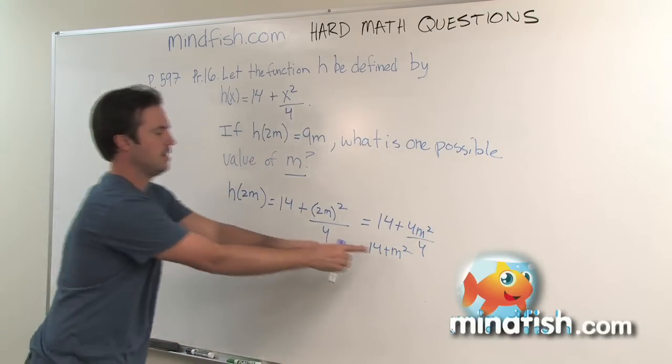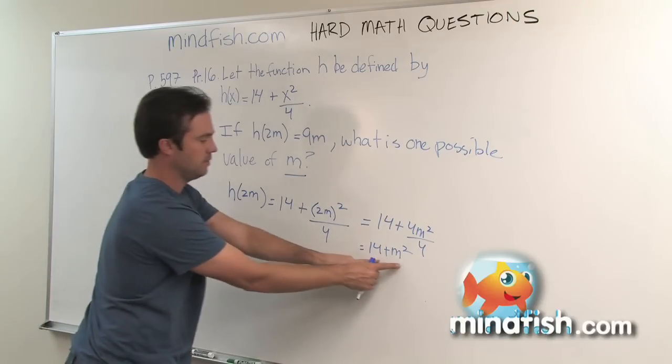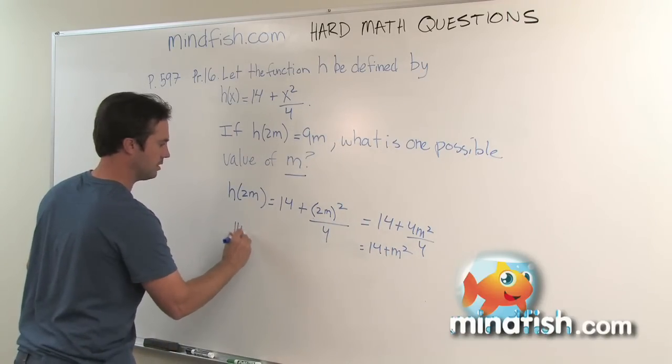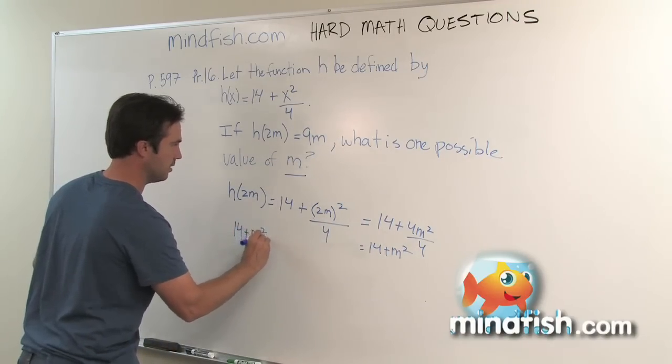And it says that that, or h(2m), which is that, is equal to 9m. Well, now I've just got a little bit of algebra to do.